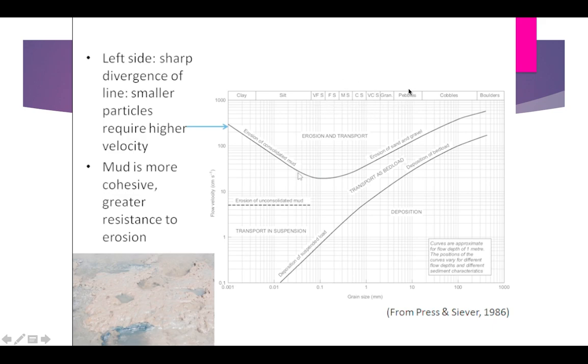Now suppose we have a combination of sediment where sand is mixed with pebble, cobble, and boulder. We kept all these mixtures into a one meter deep tank and start providing flow velocity of 200 cm/s.